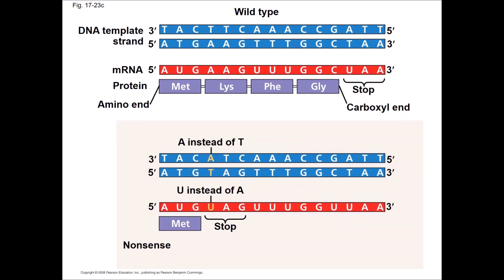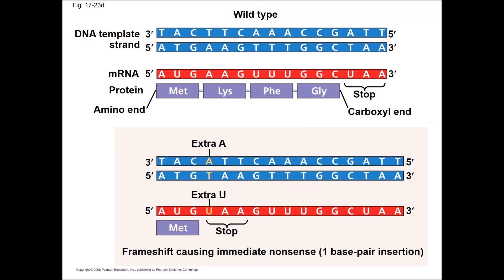A nonsense mutation converts an amino acid encoding codon into a stop codon. This results in a truncated protein that is often non-functional.